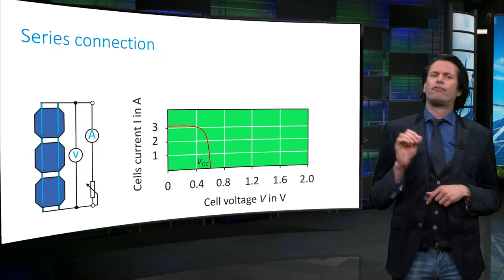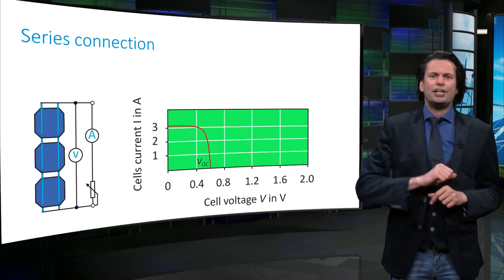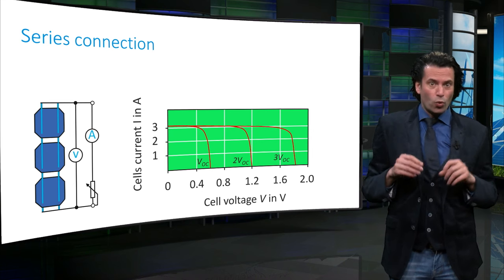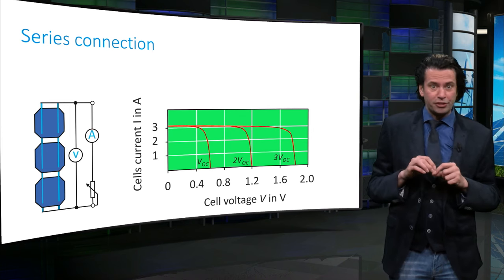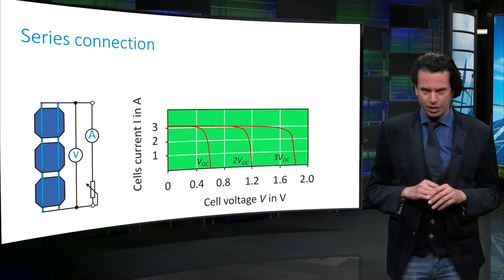Let's first take a look at series connections of the cells. Here, the open circuit voltage of each cell adds up, whereas the current through the series of cells is constant, assuming steady state conditions.